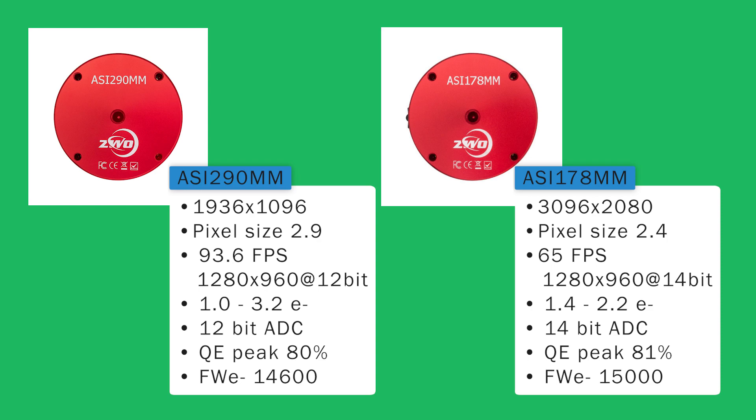If forced to choose between the two, I'd say that the ASI 290 is probably the best planetary camera of the two as it offers a faster frame rate per second. However, the ASI 178 offers a wider field of view and a 14 bit ADC, which may be nice if you also want to catch larger images of the moon.